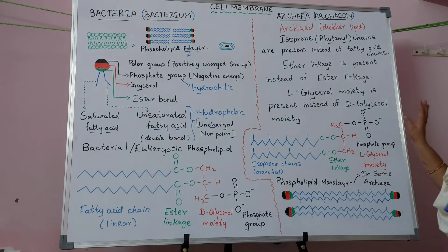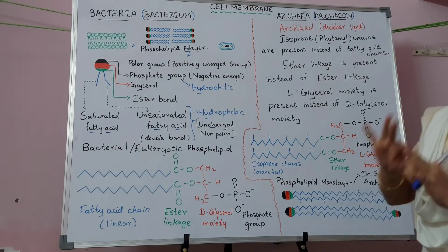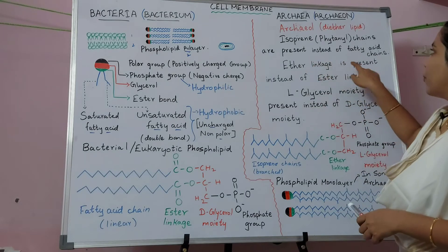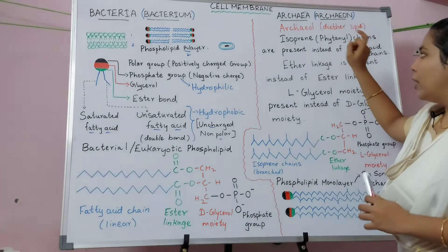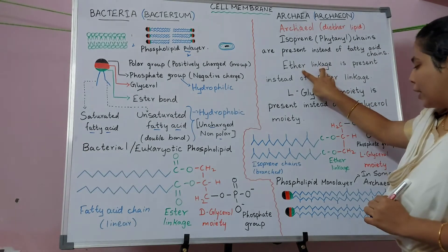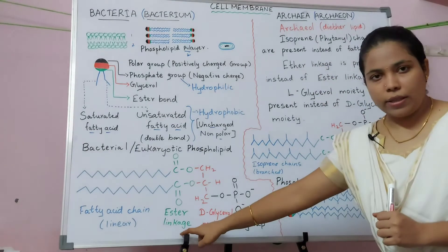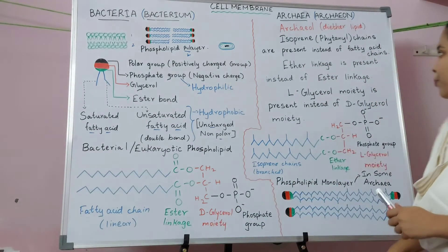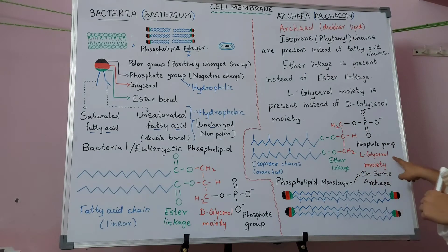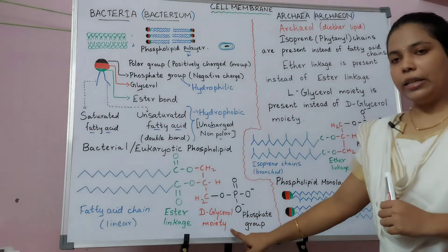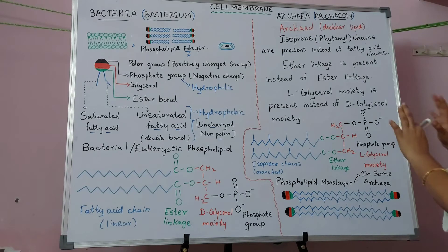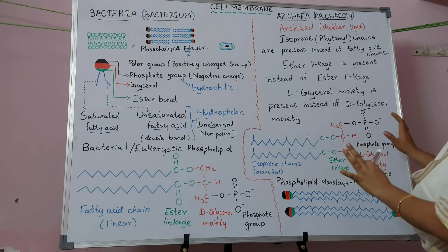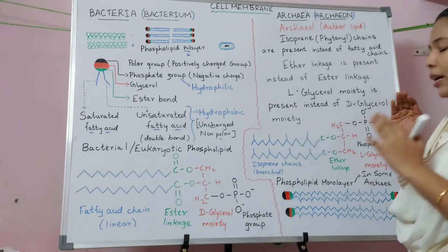The phosphate group is the same in both. To summarize, there are three key differences in archaea: the fatty acid chain is replaced by an isoprene chain, an ether linkage replaces the ester linkage, and an L-glycerol moiety replaces the D-glycerol moiety. This is the structure of the archaeal cell membrane.